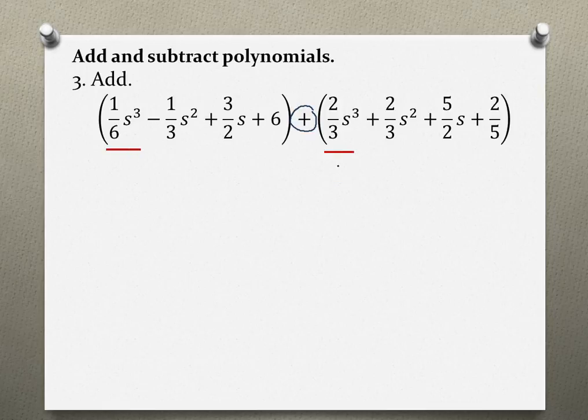In this case, we have s³ in the first set of parentheses and s³ in the second set. We add their coefficients together. In this step, I just want to focus on combining like terms; I will deal with the fractions later. So we add the coefficients: 1/6 + 2/3, keeping the same variable and exponent.